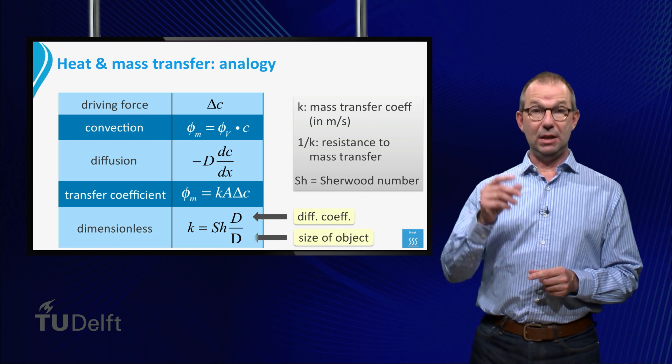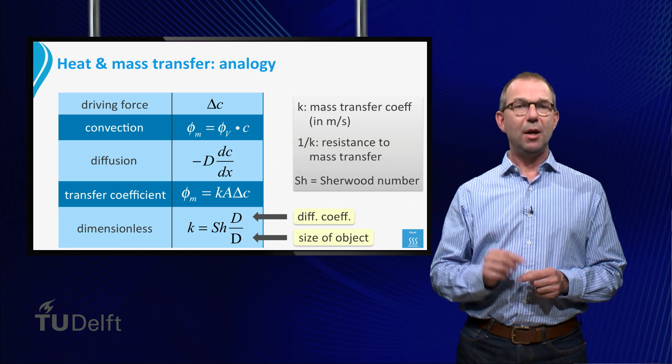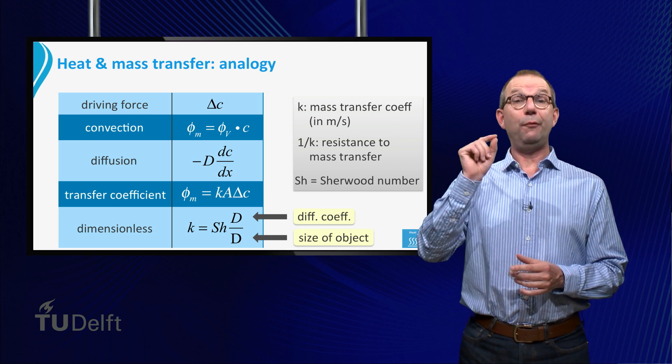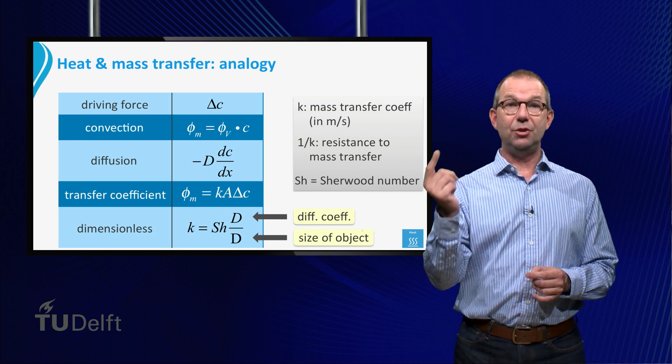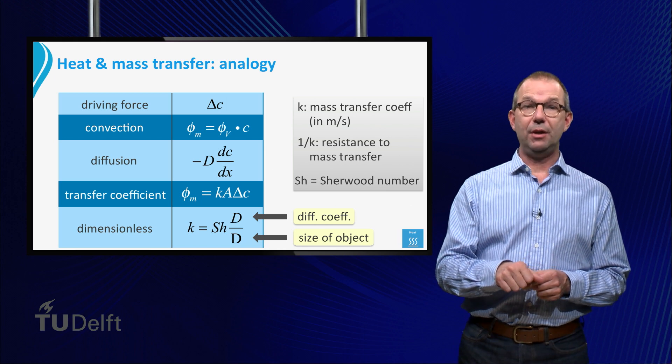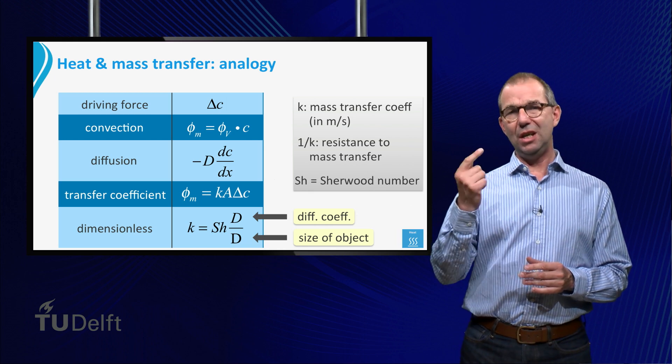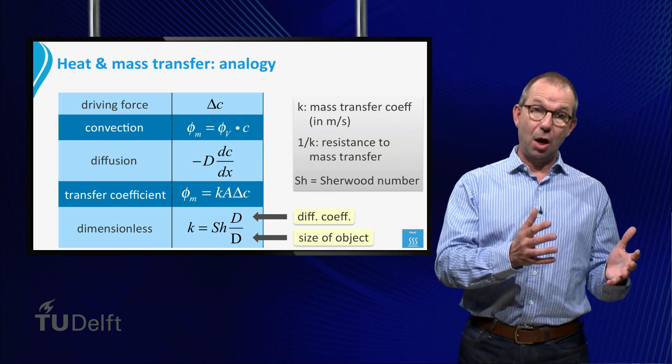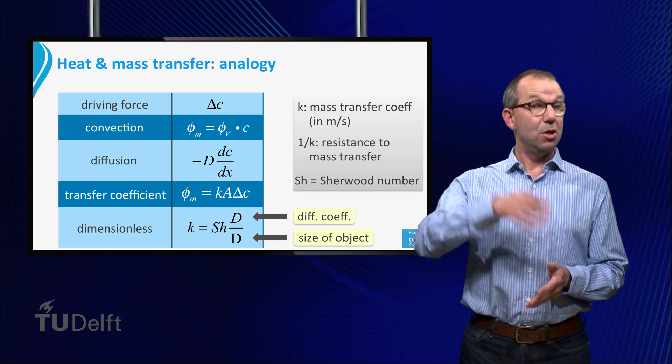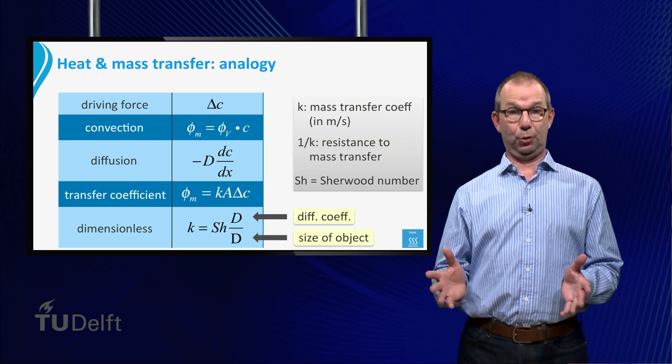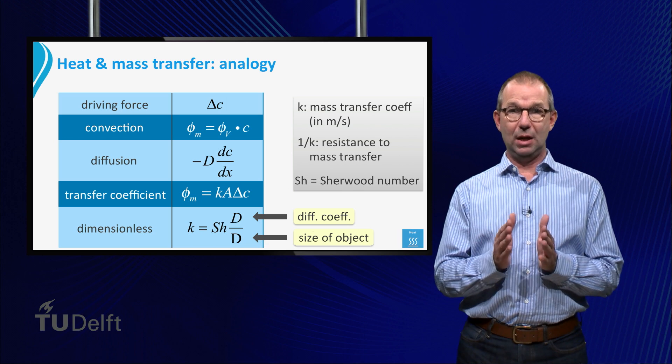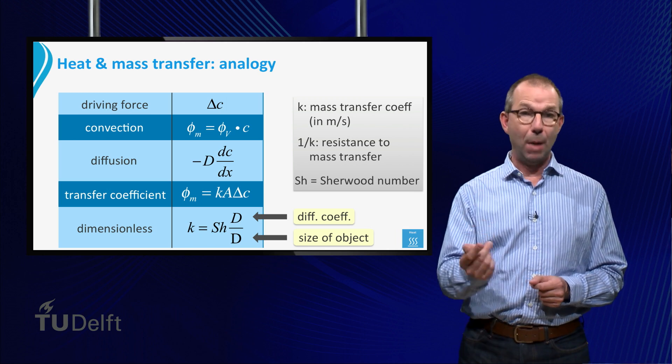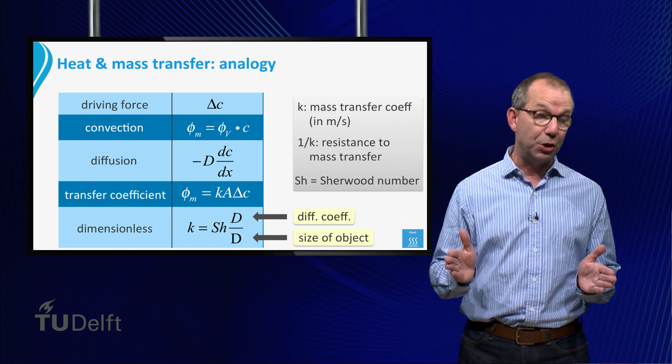Note that in the equation relating k to the Sherwood number, we have to be precise in our writing. The D in the numerator is the diffusion coefficient. The D in the denominator, on the other hand, is the size of the object. This is easy to remember. A large diffusion coefficient, we expect a large mass flow and thus a large k. On the other hand, if the layer through which the diffusion takes place is thick, the diffusion is slow. Hence, the flow must be inversely proportional to the size of the object.